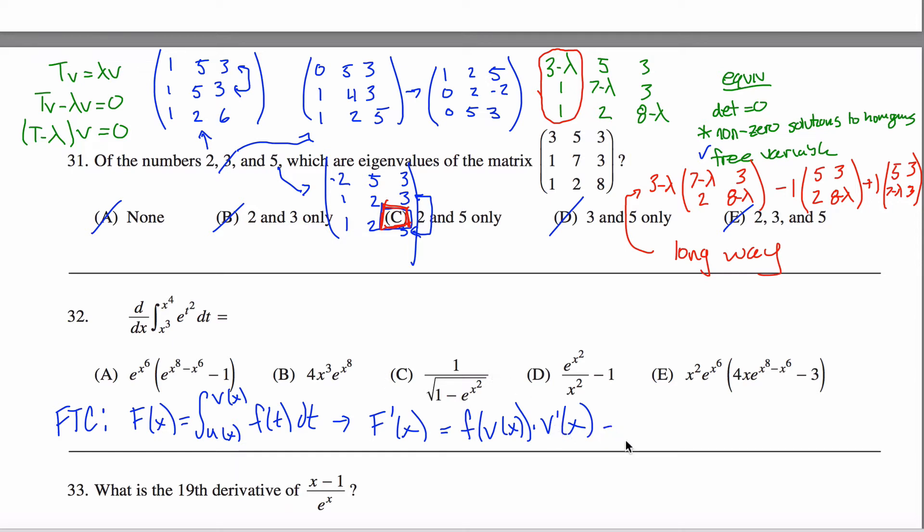And then I got to do the same thing with the U's, just like with any other integral, you take the top one and subtract the bottom one. So I got F prime, or no, sorry, F of U of X times U prime of X.